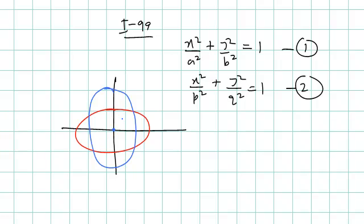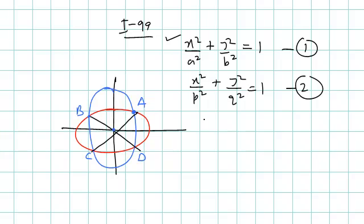It is given that their points of intersection A, B, C, D are extremities of a pair of conjugate diameters of the first ellipse. So A, B, C, D are the extremities of diameters AC and BD, and it is given that these four points are the extremities of the pair of conjugate diameters.